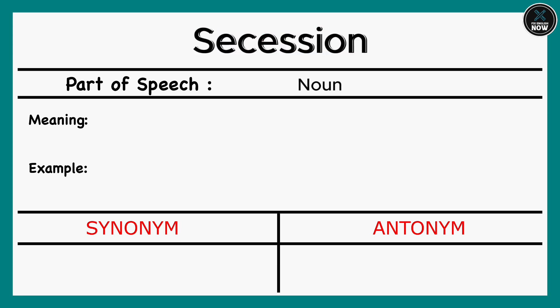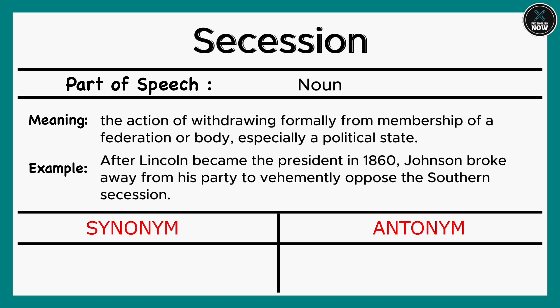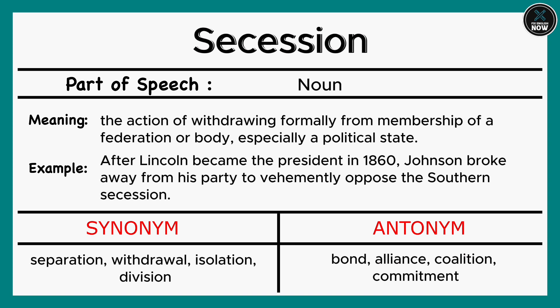Secession: The action of withdrawing formally from membership of a federation or body, especially a political state. Example: After Lincoln became president in 1860, Johnson broke away from his party to vehemently oppose the southern secession. Synonyms: Separation, Withdrawal, Isolation, Division. Antonyms: Bond, Alliance, Coalition, Commitment.